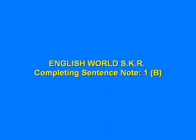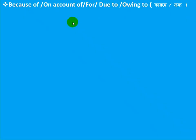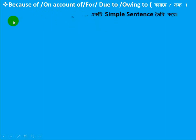Dear Learners, welcome to English World SKR. Today we will learn how to complete an incomplete sentence — NOT 1B. We will learn how to complete an incomplete sentence based on: because of, on account of, for, due to, and owing to.